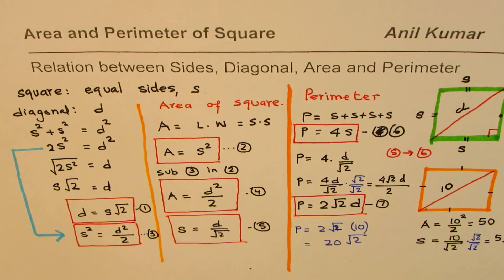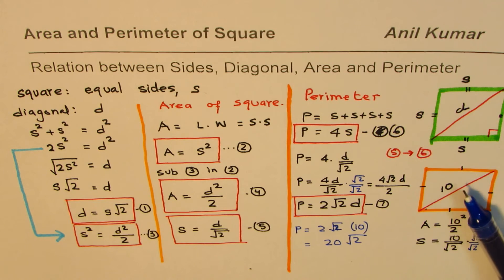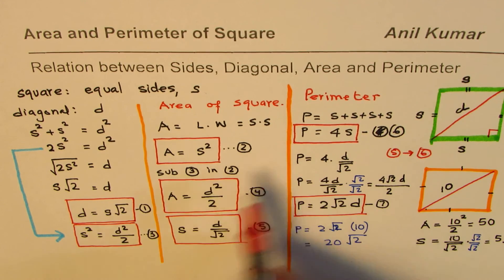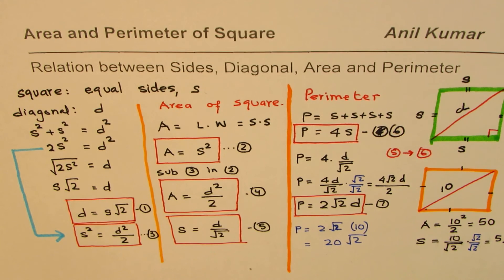You can practice with any diagonal value — 6 units, √7, any number — and easily find area, perimeter, and side length. You don't have to memorize these formulas, but it saves time in a multiple-choice, time-bound test. Practice with these so you can handle such questions easily. I'm Anil Kumar — please share and subscribe. Thank you, and all the best.